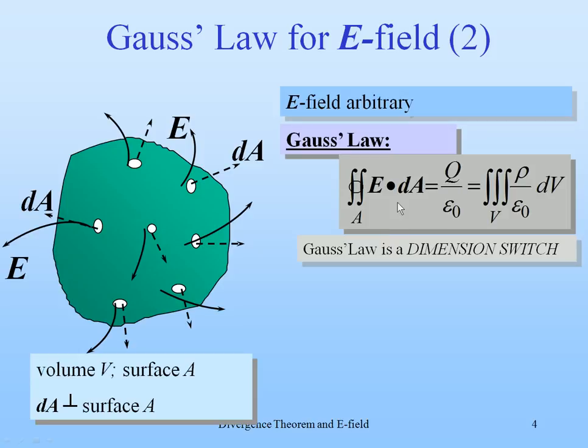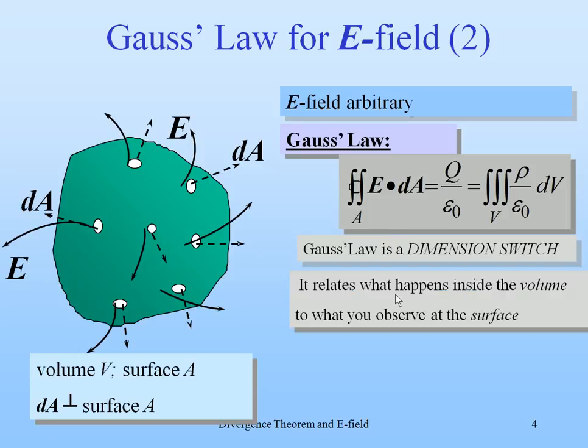Gauss law in fact is a dimension switch. And this means that it relates what happens inside the volume, the rho, to what you observe at the surface, the A.